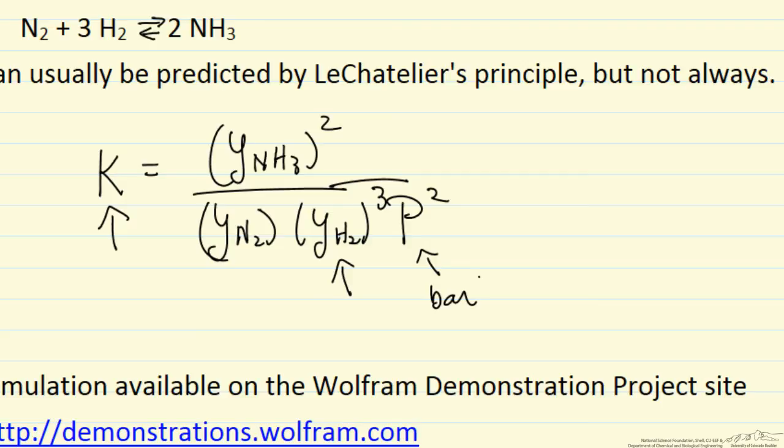So when the nitrogen to hydrogen ratio is relatively large, then we can get the effect that adding nitrogen lowers the hydrogen mole fraction.